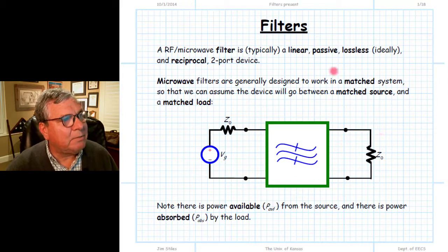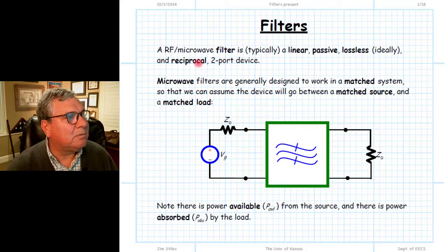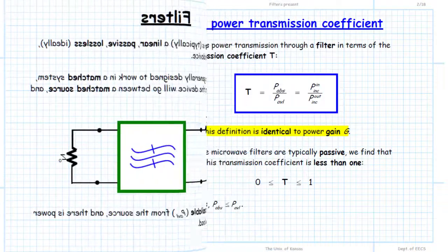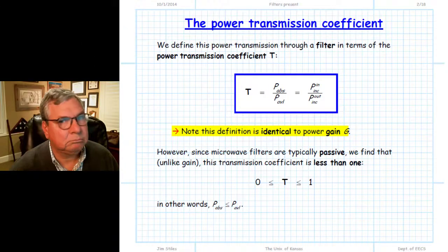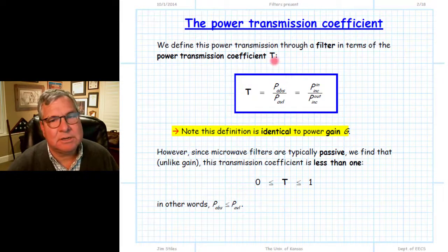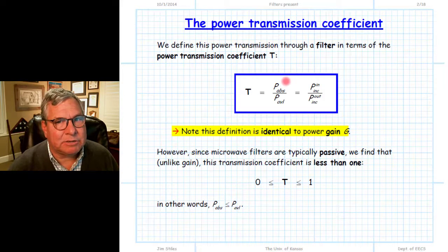A microwave filter is a linear, passive, and ideally lossless and reciprocal two-port device. We have power available from a source and we have power absorbed by the load. The most fundamental parameter in a microwave filter is the power transmission coefficient T. The power transmission coefficient is defined as the ratio of the power absorbed by the matched load at the output to the power available from the matched source at the input.